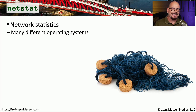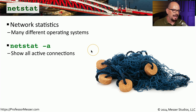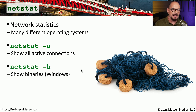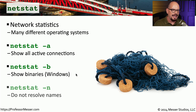Another useful utility is netstat — network statistics — which allows us to see who we're communicating with over the network and who might be communicating with us. 'netstat -a' shows all active connections coming to your machine and those you're making to other devices. 'netstat -b' is used in Windows to show the Windows executable being used for each network connection. 'netstat -n' shows the same information but only displays IP addresses without resolving names from DNS.